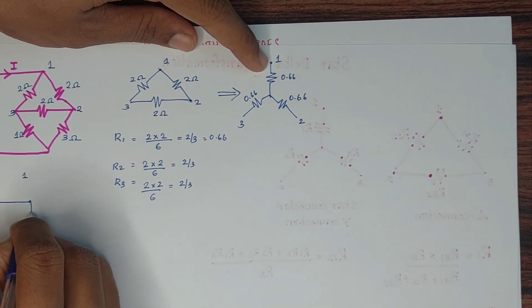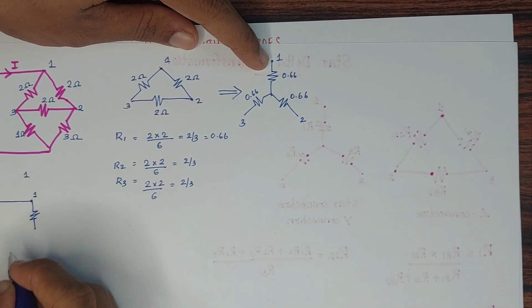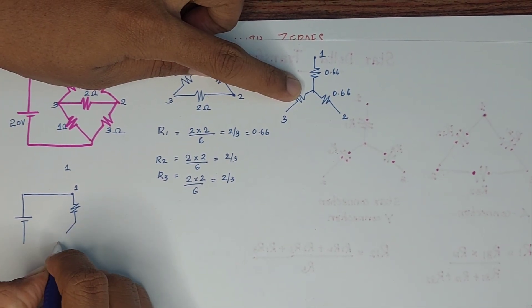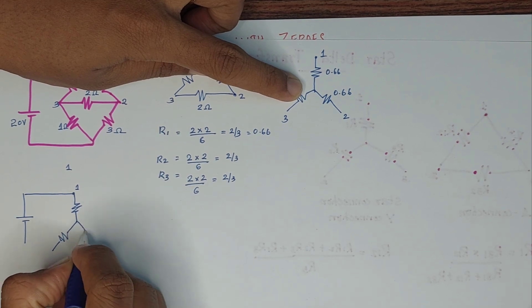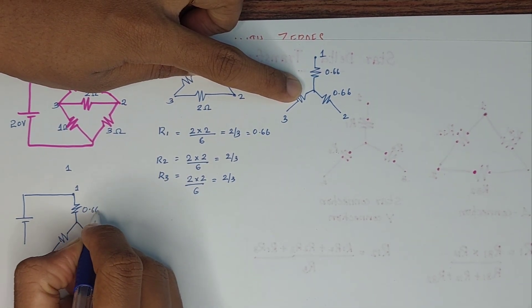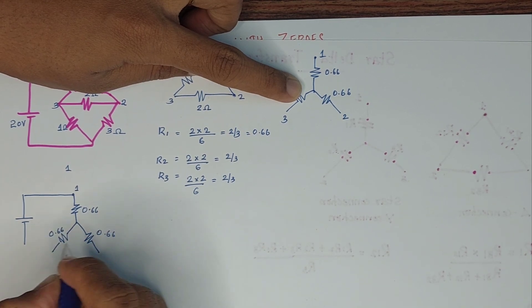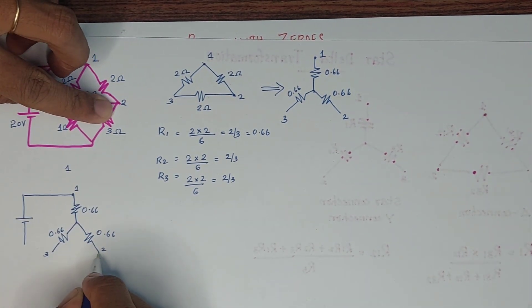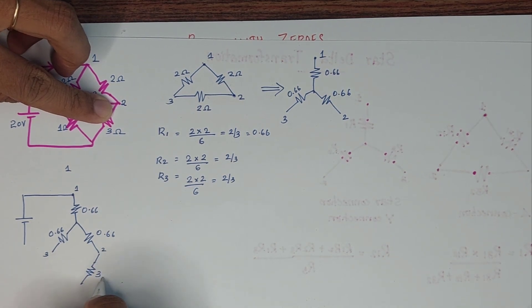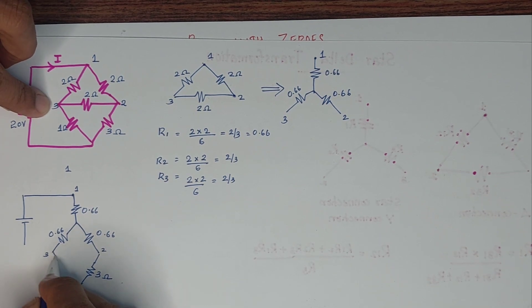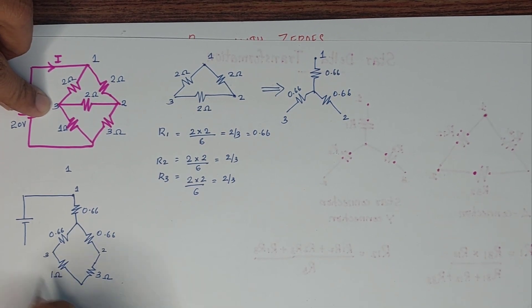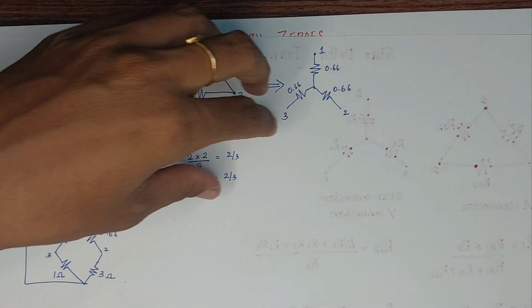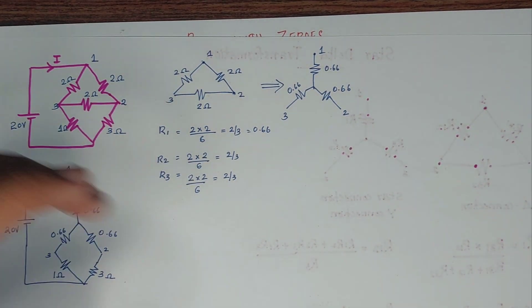I will add the first resistance to this one. The end of this branch has 0.66 ohm, and in the end of the other branch there is also a resistance. The next one is 0.66 ohm. This connects to the 2 ohm, giving node 2. This connects to the 3 ohm, giving node 3. The 3 ohm resistance and the 1 ohm resistance are now in the simplified circuit. This is the 20 volt source with current I.